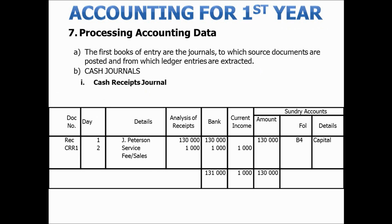Now that we have a better understanding of the bigger picture of the accounting process, let's go into some detail and have a look at the specific transactions affecting the journal entries. This we will do in order to gain a better understanding of how these transactions will then later on affect the posting to the ledger accounts.